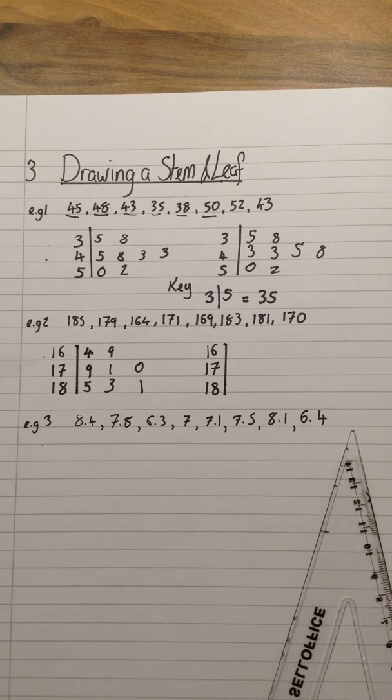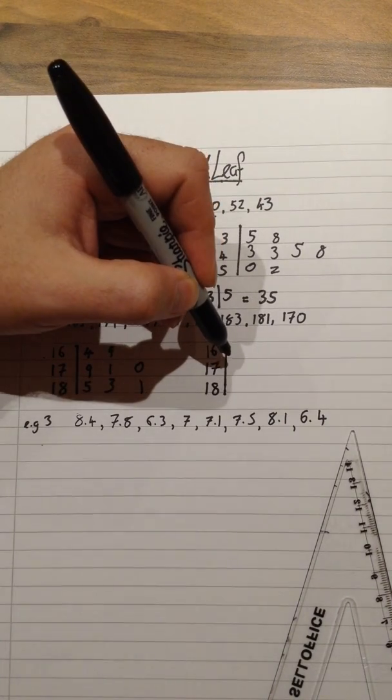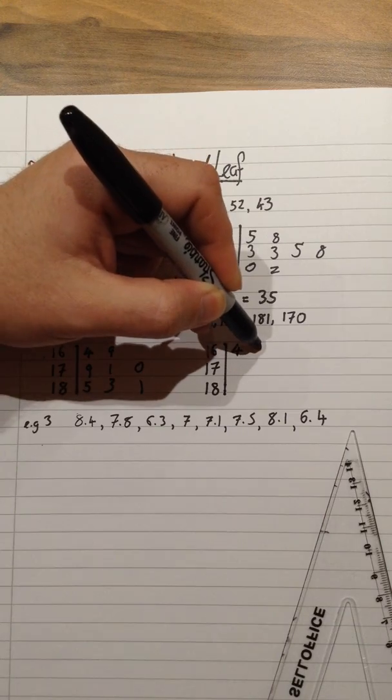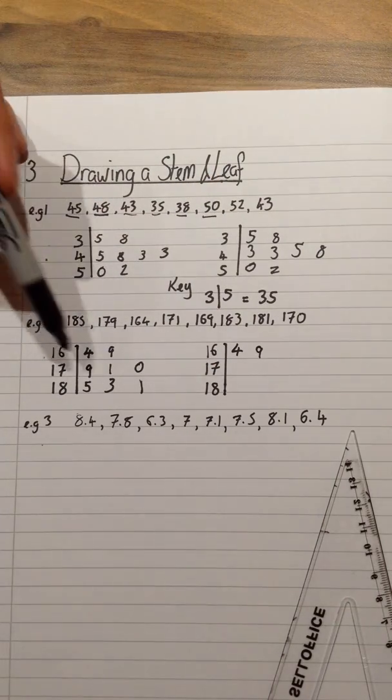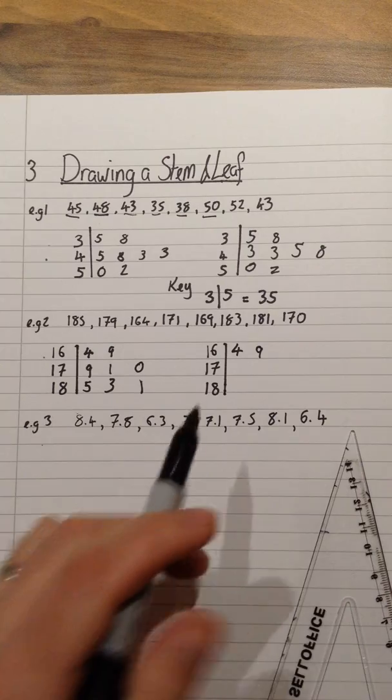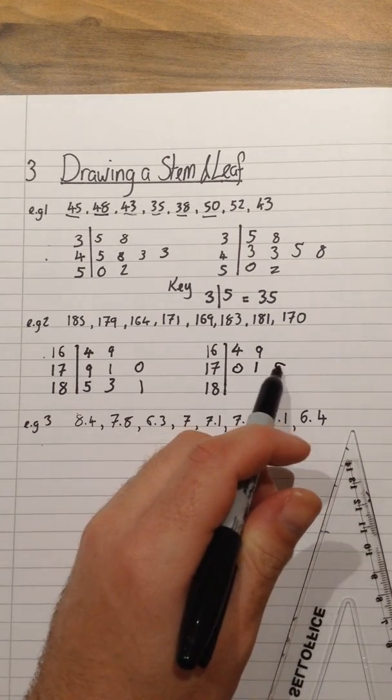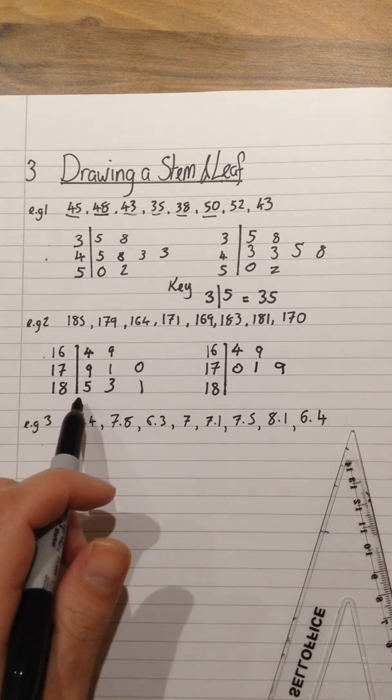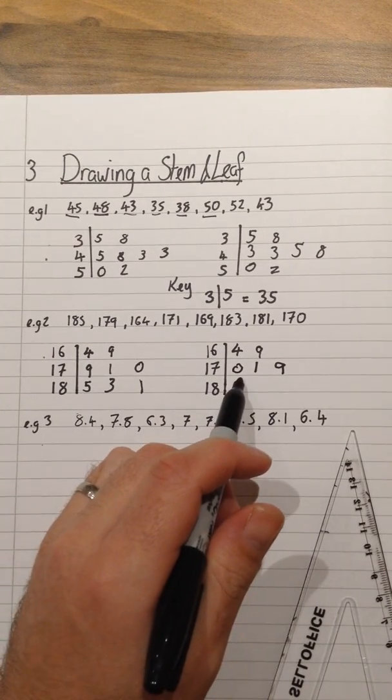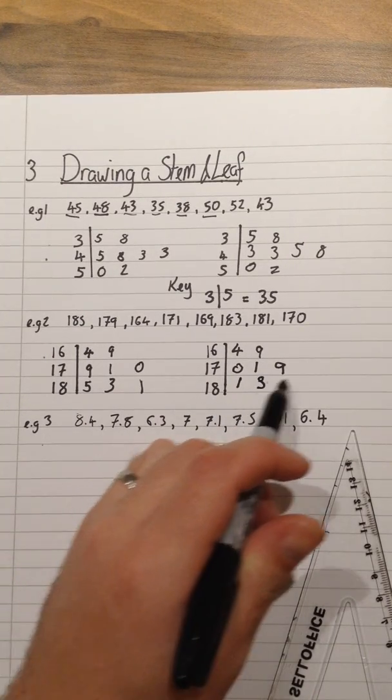I then put each row in order, smallest to biggest. So for the top line, I get 4 and 9. 9, 1, 0. Put in order, smallest to biggest, become 0, 1, 9. And for the bottom row, this will become 1, 3, 5.